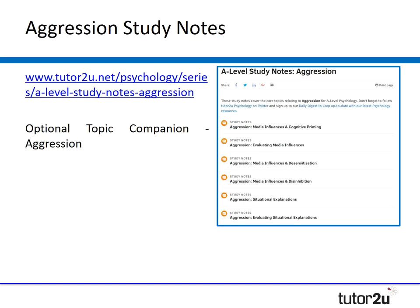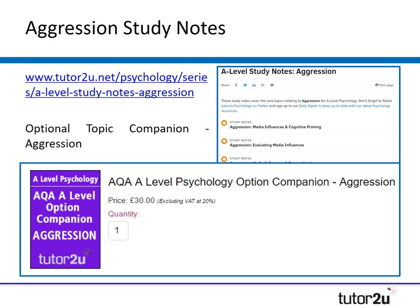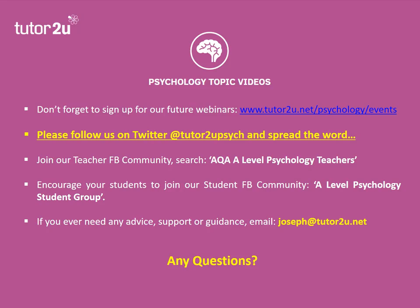All aggression study notes from the optional topic companion are already available free on the TuteTu website. If you'd like them in colour with pictures, there is a site licence option priced at £30. All resources are available on the website now, and if you have any questions feel free to follow up via the Facebook group, Twitter, or by direct email. Hope you enjoyed that and I'll see you in a webinar soon.